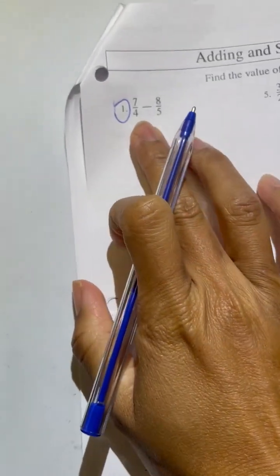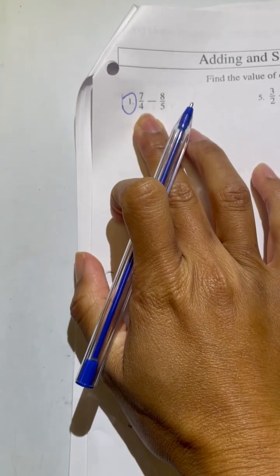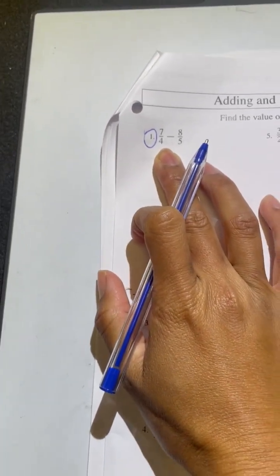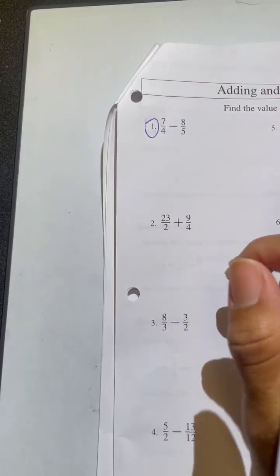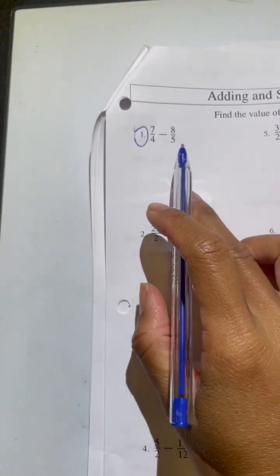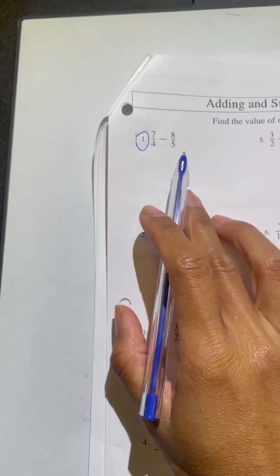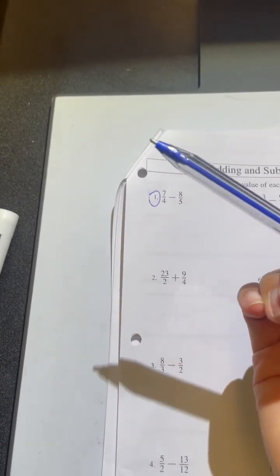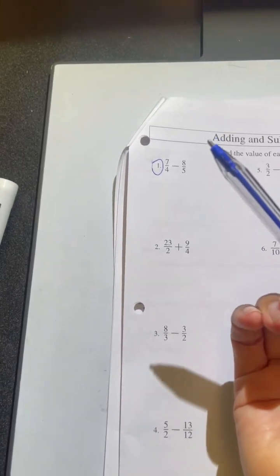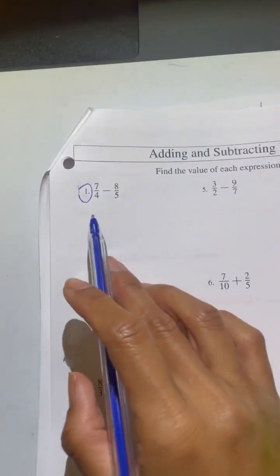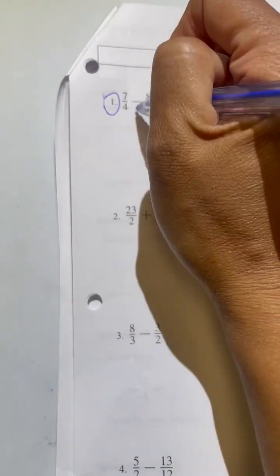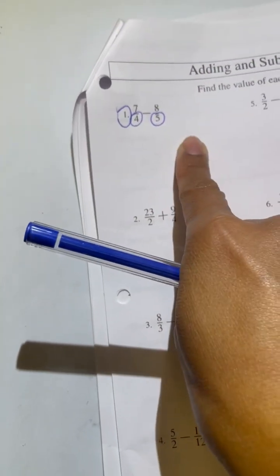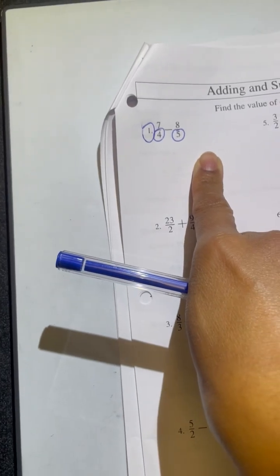So first thing is I see adding and subtracting. So I know right away I need to have common denominators in order to combine. They are not common. So I must change it in order to combine them. And we have the power of our pen and we have the power of our brains to do this. So here, what, so I look at the four and I look at the five and say what multiple do they have in common? 20.